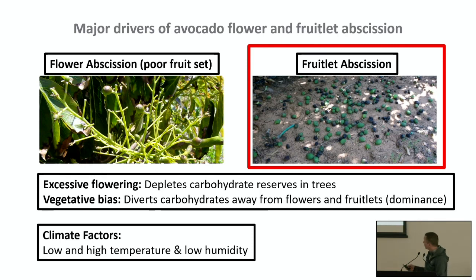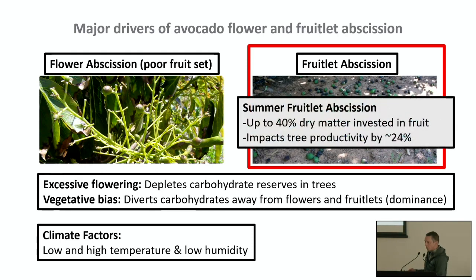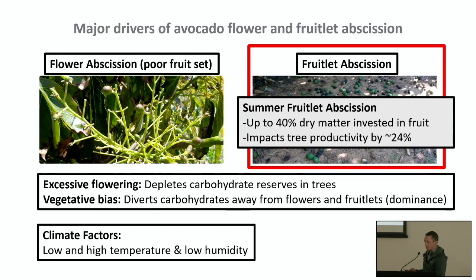The focus of this presentation is on fruit lead abscission — more importantly, on summer fruit lead abscission — as it's been estimated that trees have already invested up to 40% dry matter into those fruits at that time.